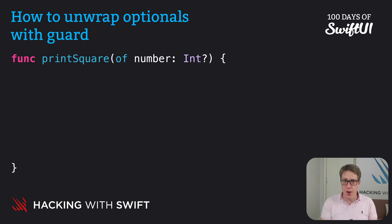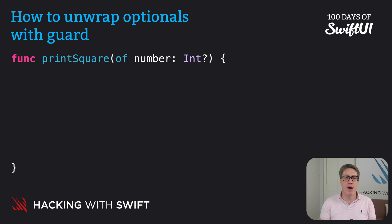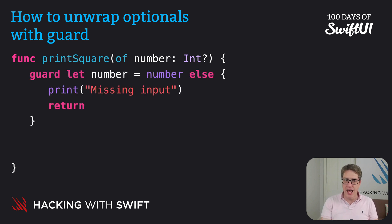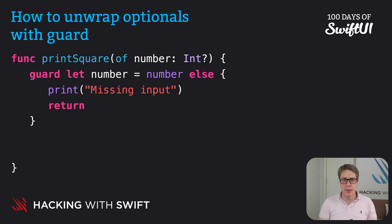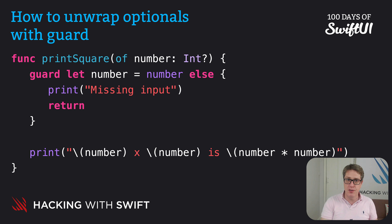Here's a function called printSquareOfNumber, taking some optional integer. It might have a value inside — a billion — or it might not — nil. Inside there we're going to say guard let number equals number, else print missing input and return. So we'll unwrap the optional integer into a shadowed constant of itself, number, otherwise print missing input and return. And after that guard block finishes, we'll say print number times number is number star number.